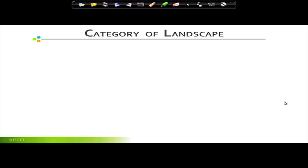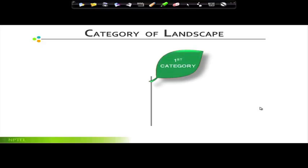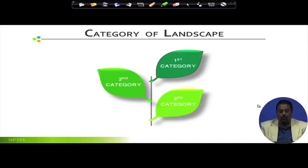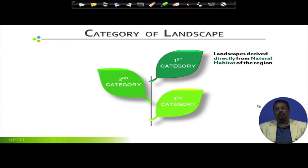To summarize the distinction: architecture is indoor, landscape is outdoor; architecture uses artificial material, landscape uses natural material; architecture is introvert, landscape is extrovert; architecture is orthogonal, landscape is free-flowing. Now we will discuss the categories of landscape. Broadly, landscapes can be differentiated into three categories. The first category is the kind of landscape directly derived from the nature or natural habitat of the region.